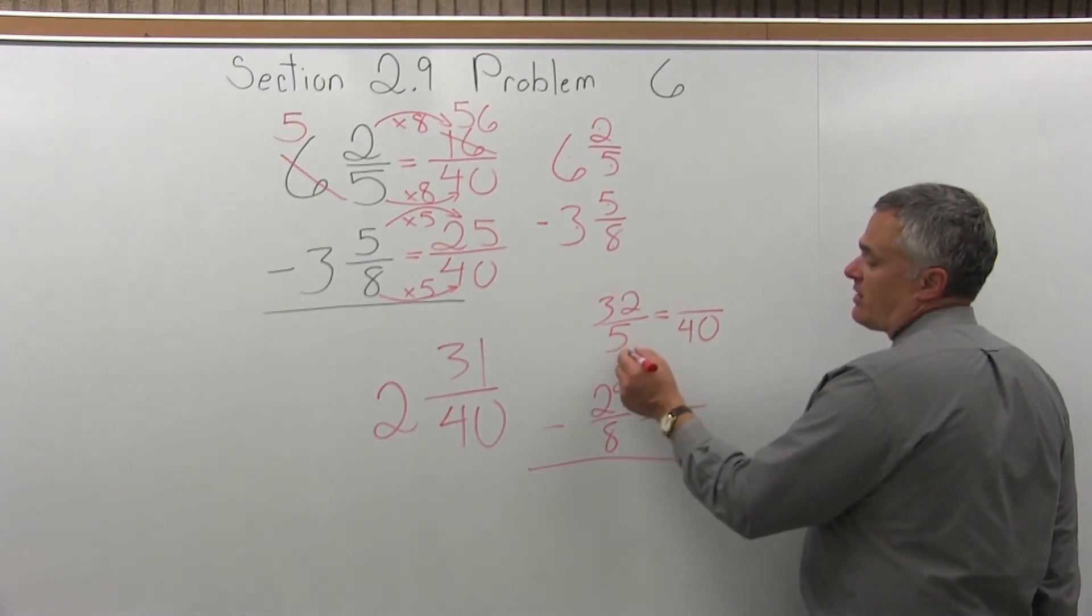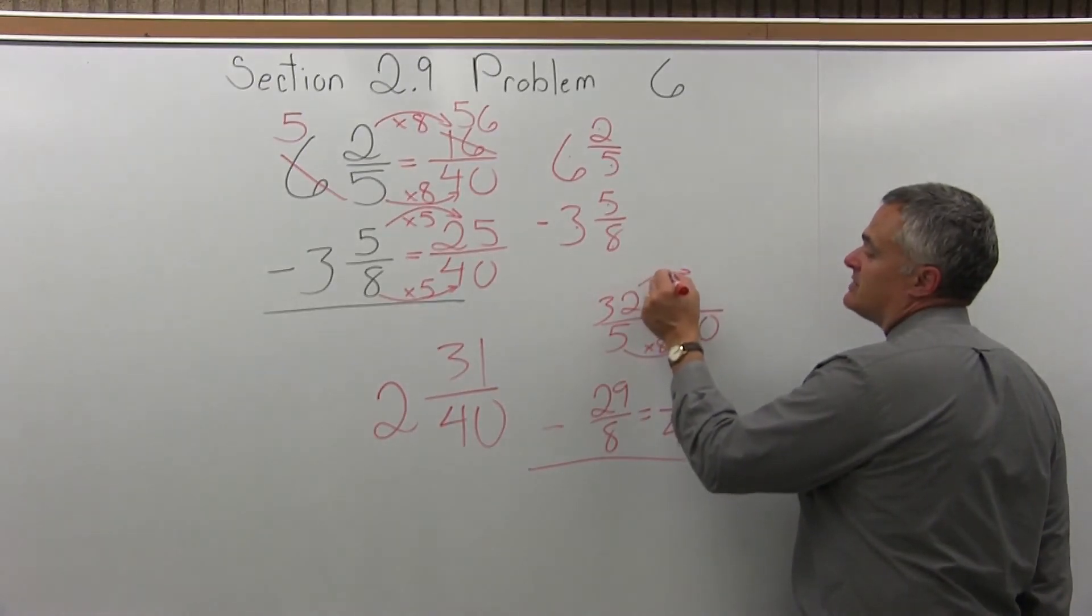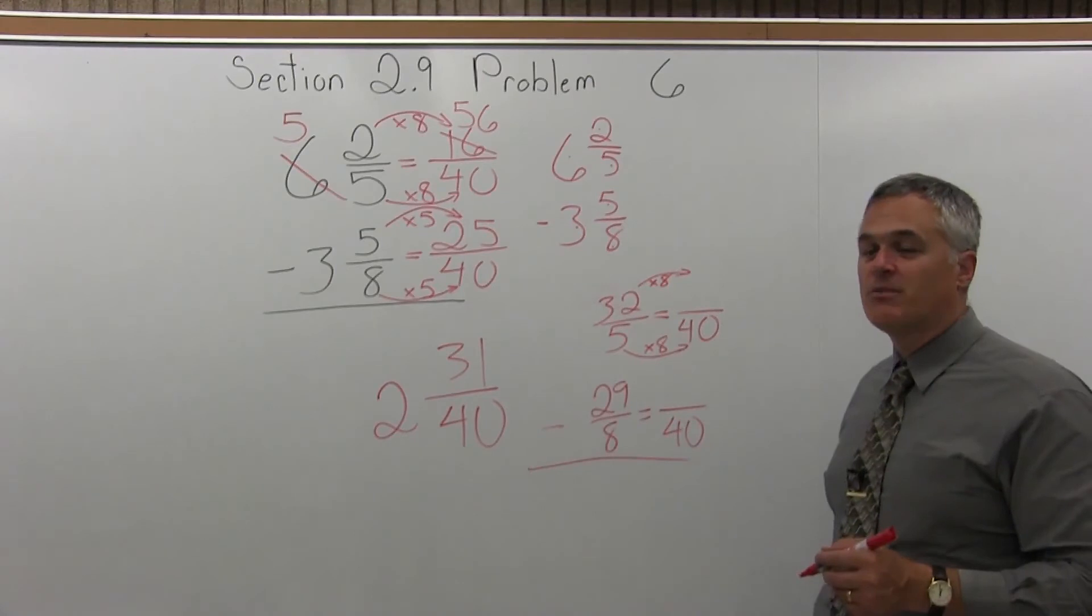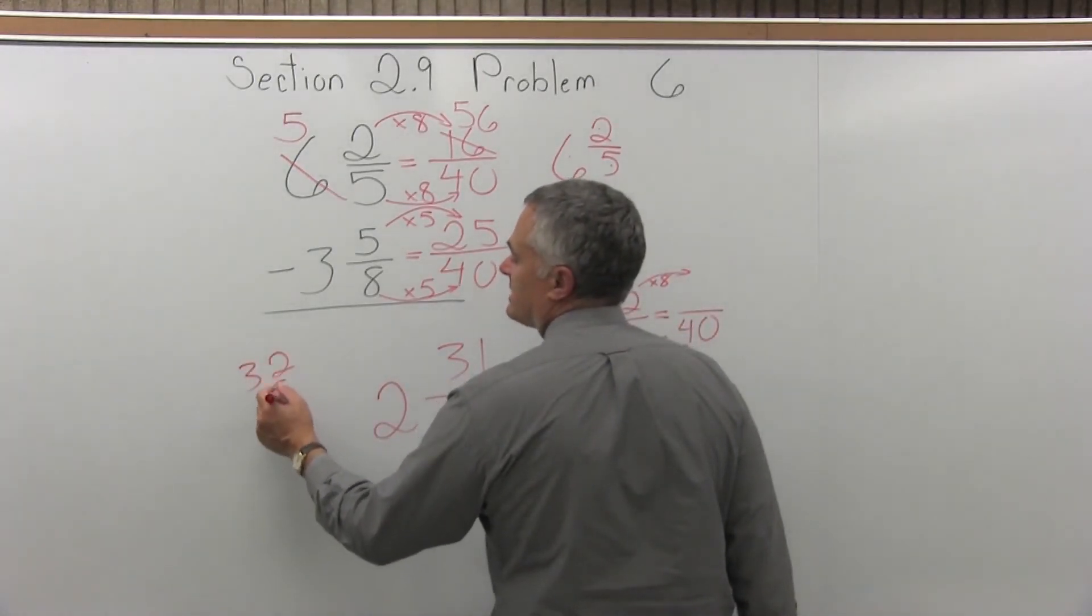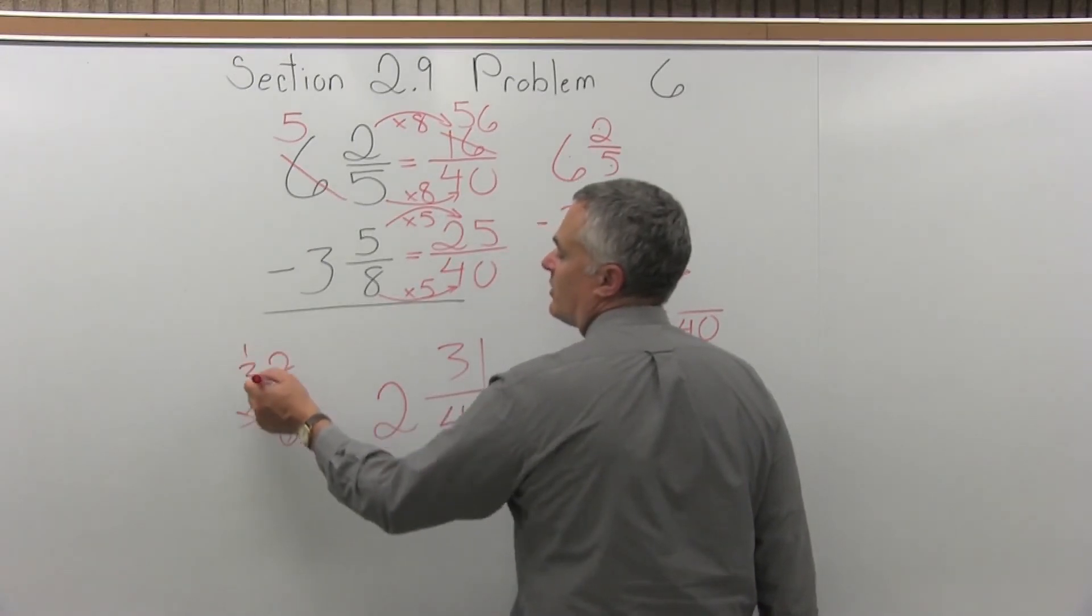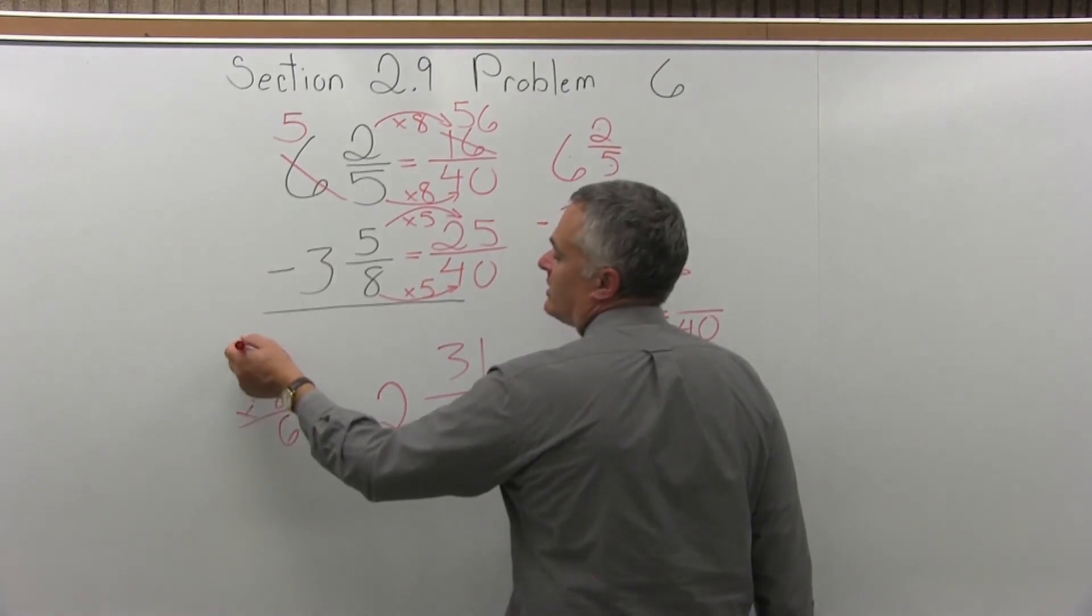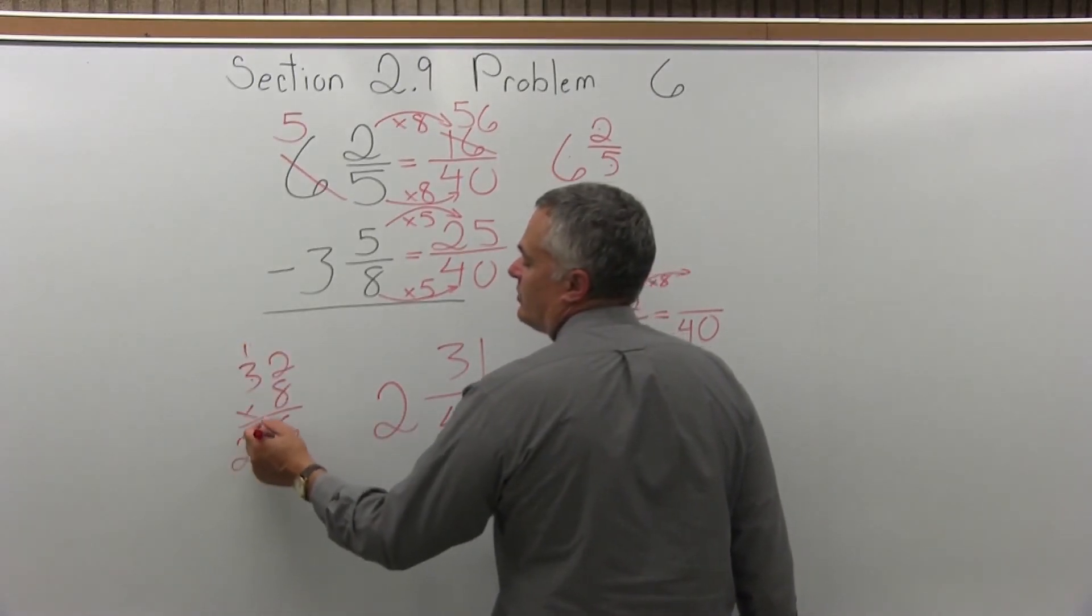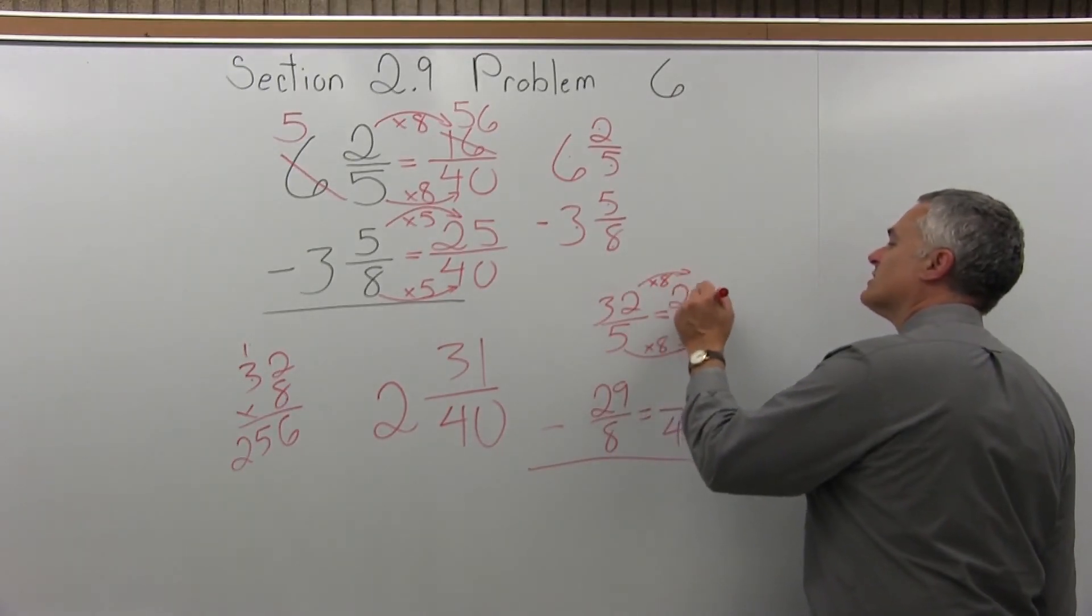So now for the top fraction, 5 times something was 40, well it's still 5 times 8. So the top is also times 8. It's a little tougher to do 32 times 8. You might not be able to do it in your head. If you can, that's great. If you can't, just come off to the side. 32 times 8. 8 times 2 is 16, 6, carry the 1. 8 times 3 is 24, plus the one more that you carried, 24 and one more is 25. 256. So I have 256 over 40.